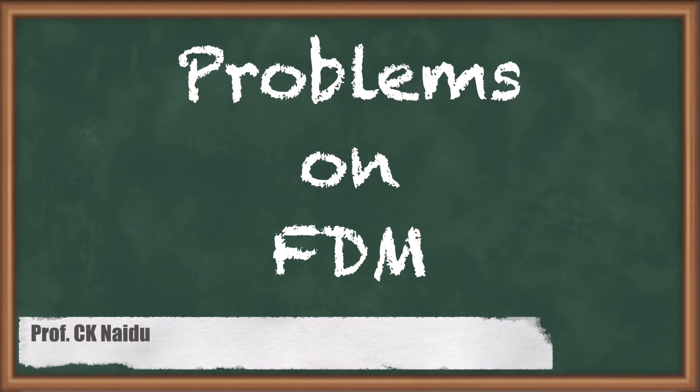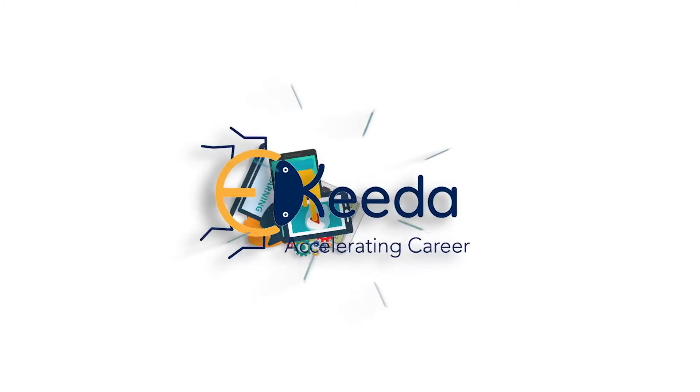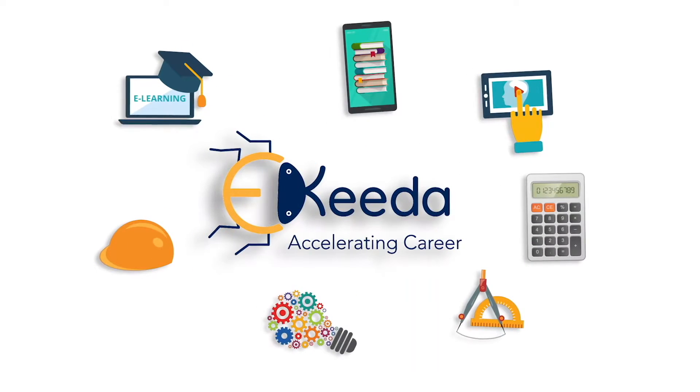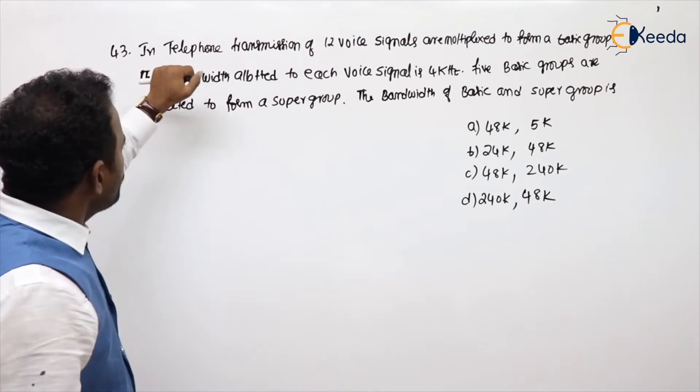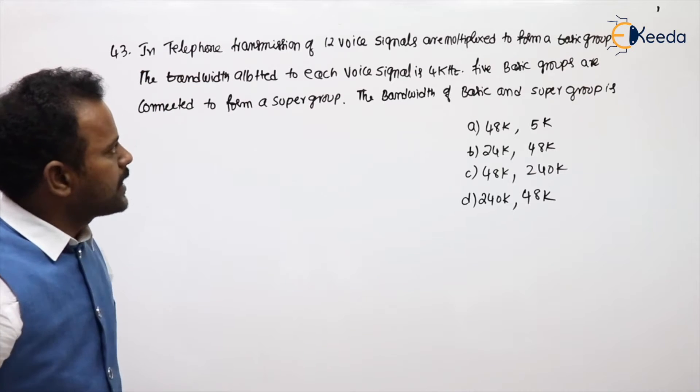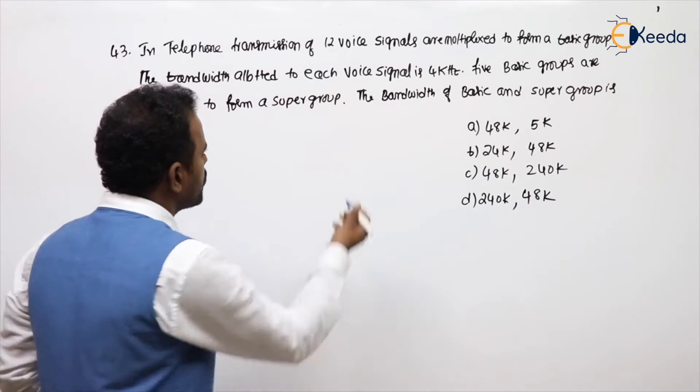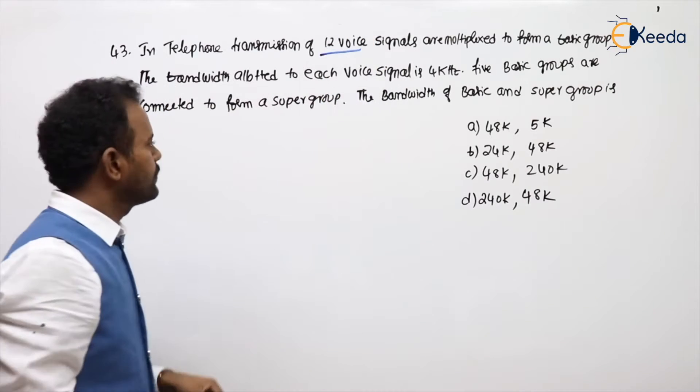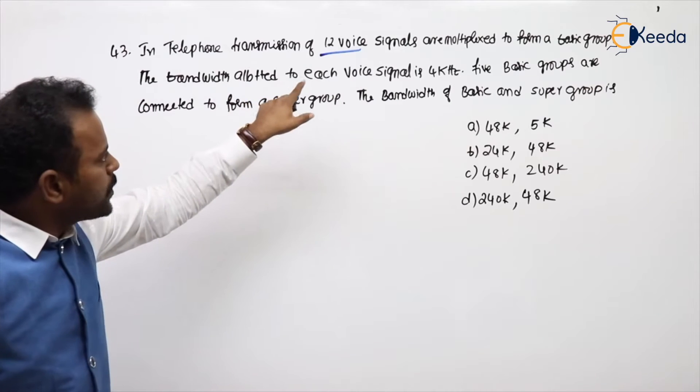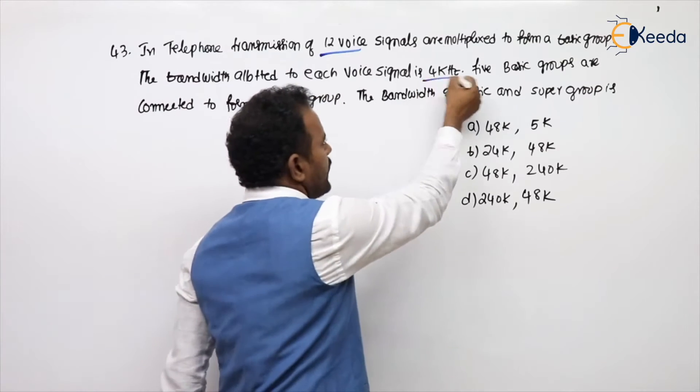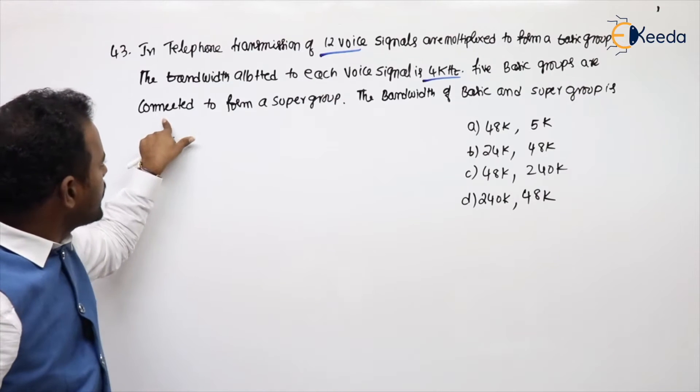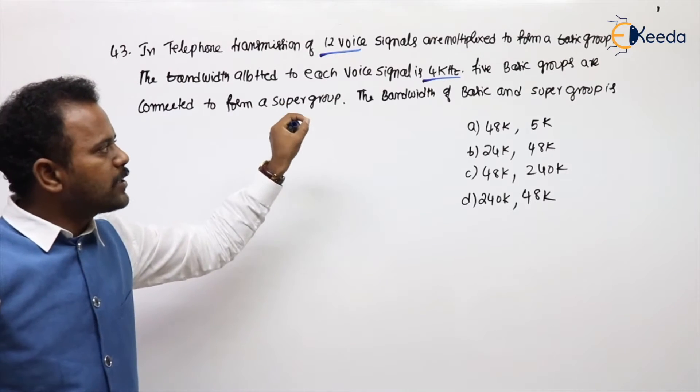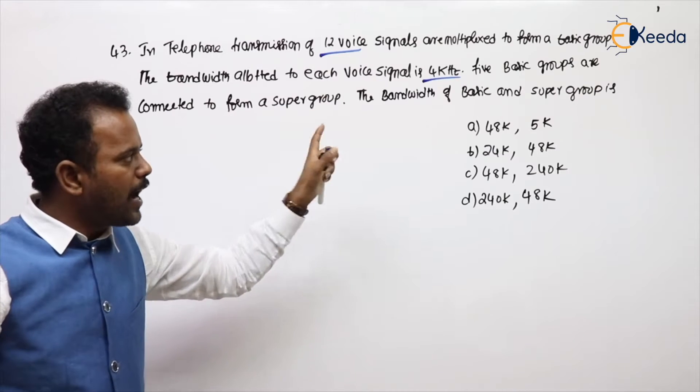Hello students, in this video we will be discussing about FDM. In telephone transmission of 12 voice signals are multiplexed to form a basic group, 12 voice signals. The bandwidth allotted to each voice signal is 4K. 5 basic groups are connected to form a supergroup.